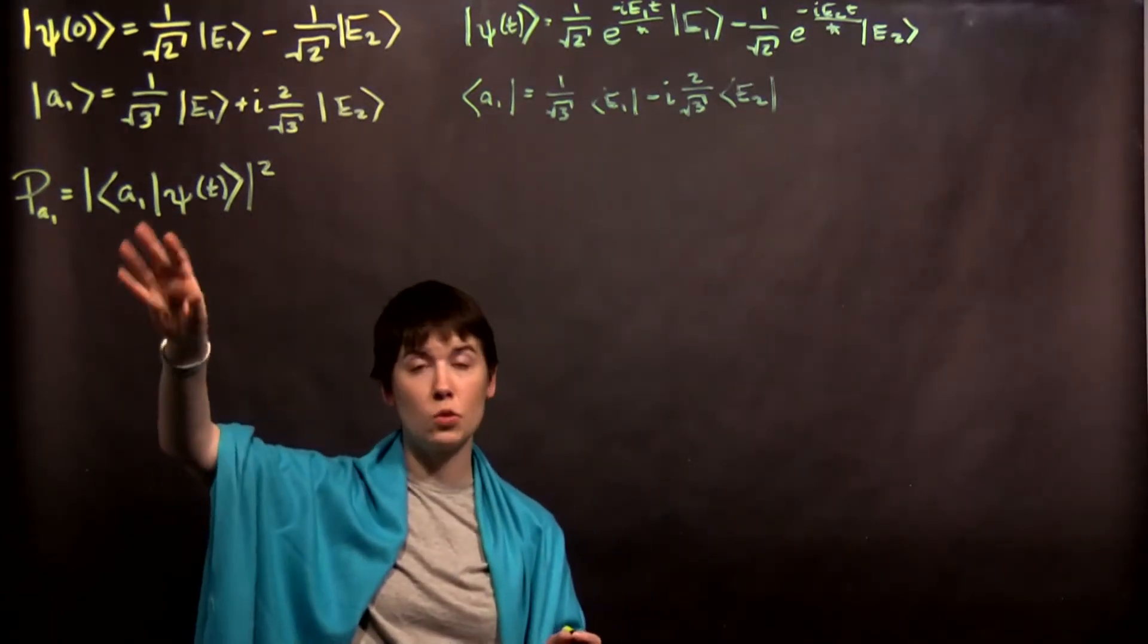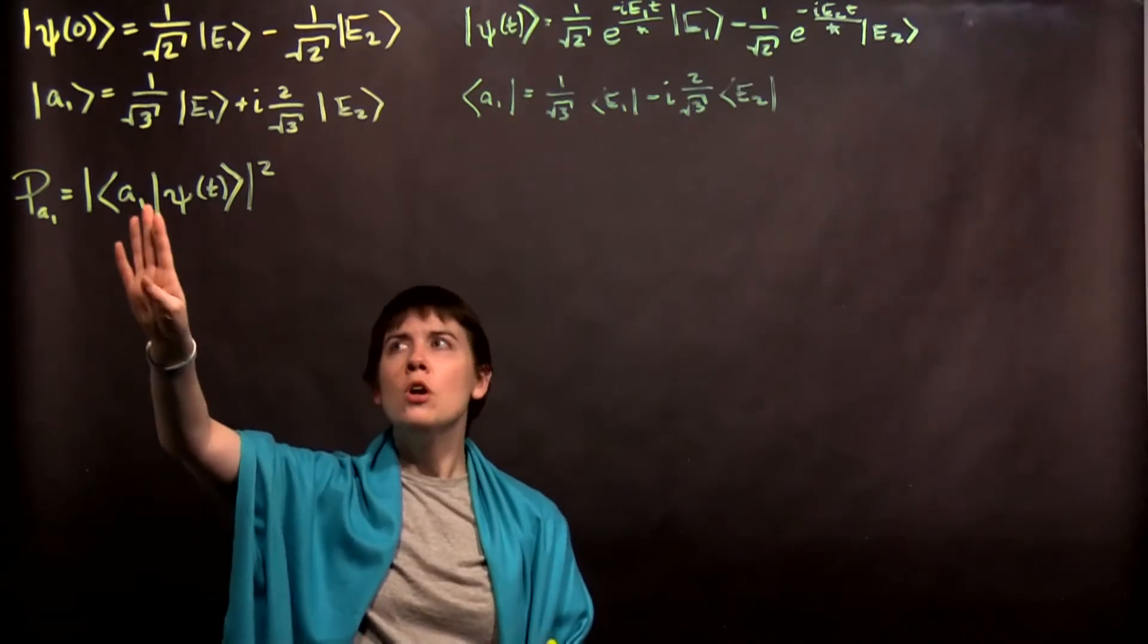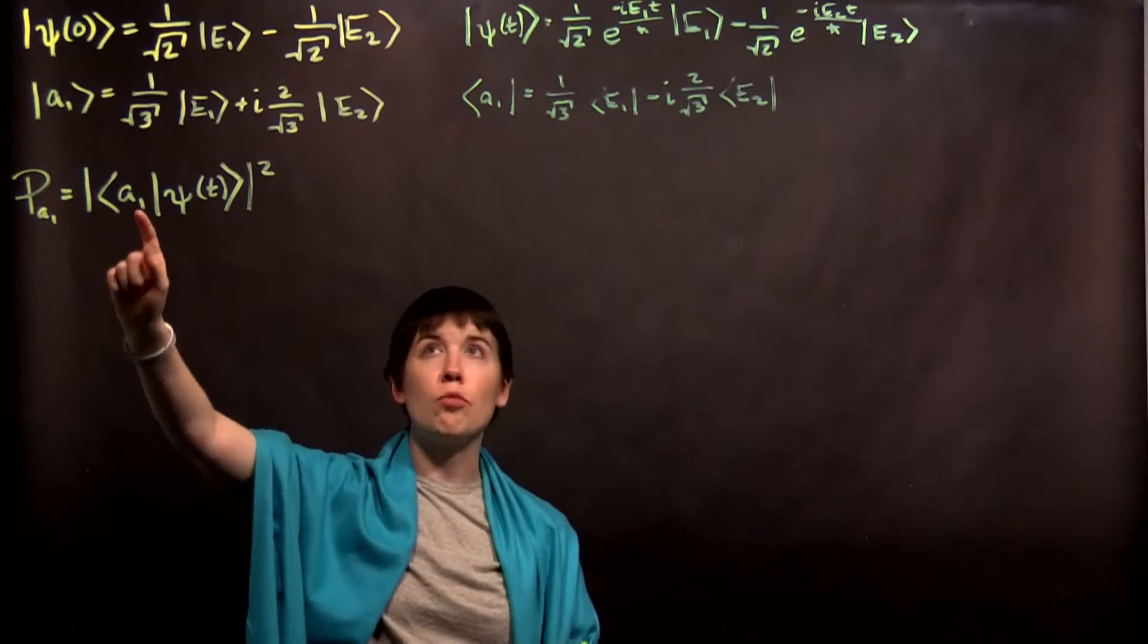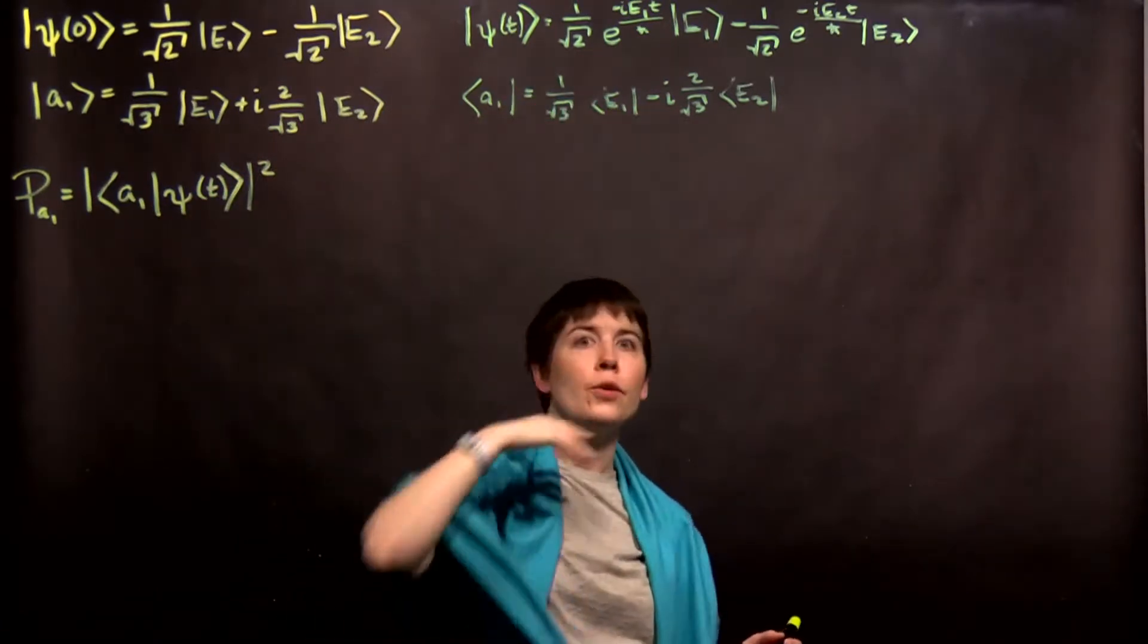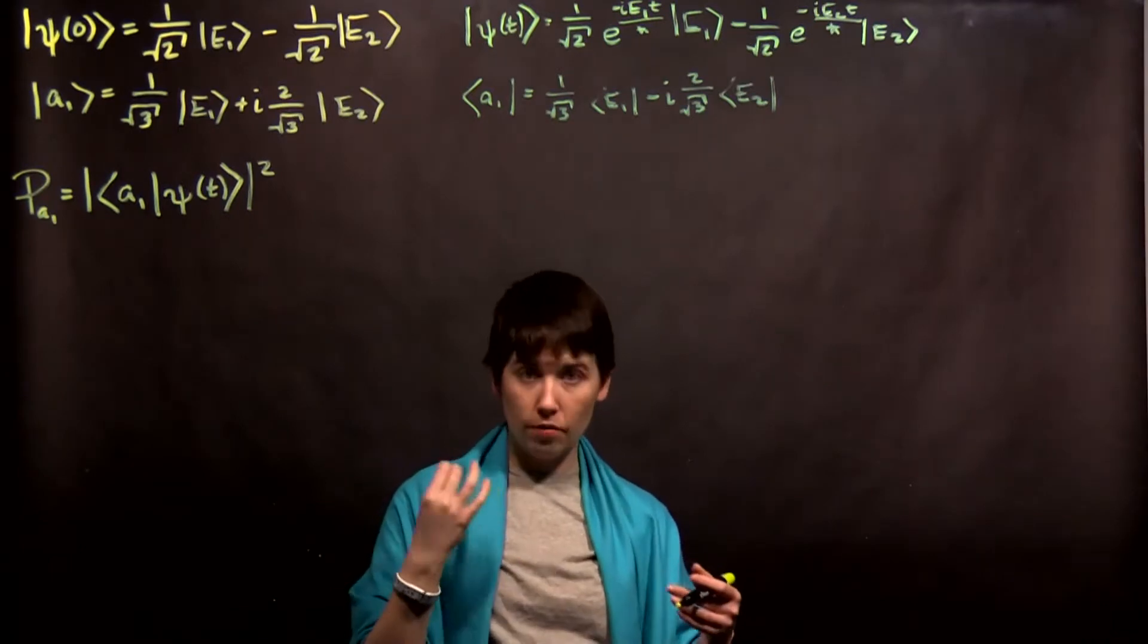We are now going to try to calculate this probability. In the prior video, I discussed what we're trying to do here. So, we need to convert our a1 ket state to a bra state. And I've written that here. Remember, we're not introducing any time dependence. This is just the eigenstate of our operator.